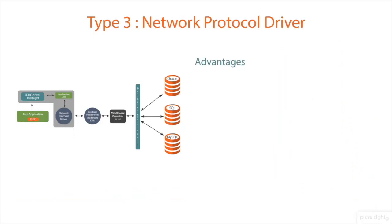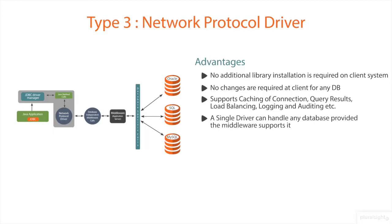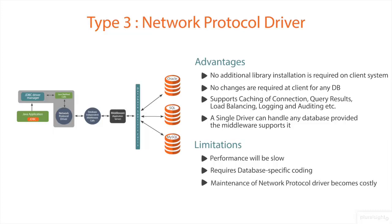The advantages of using a Type 3 driver: since communication between the client and middleware server is database-independent, there is no need for a database vendor library on the client. The client does not need to be changed for any new database added. The middleware server, which can be a full-fledged J2EE application server, can provide services like connection caching, query results caching, load balancing, logging, and auditing. A single driver can handle any database provided the middleware supports it. Disadvantages: applications will be slow due to increased network calls; Type 3 drivers require database-specific coding in the middleware; and maintenance becomes costly.